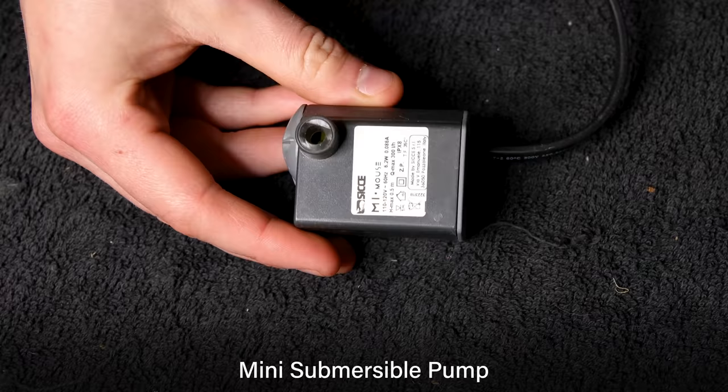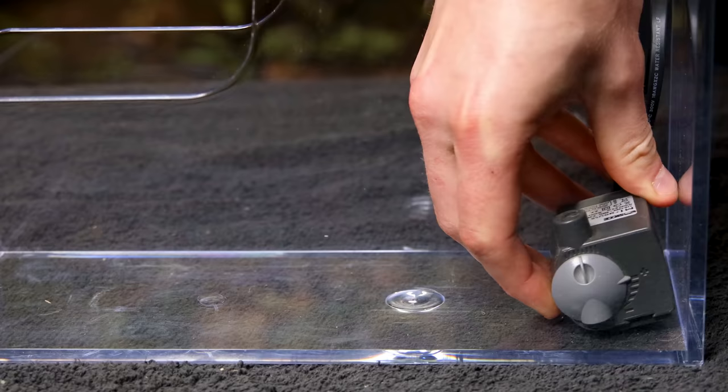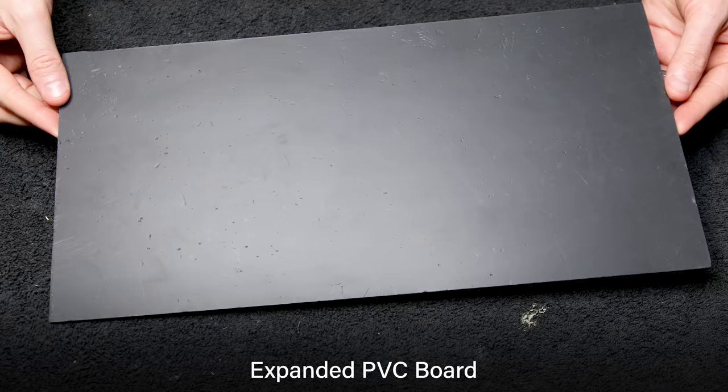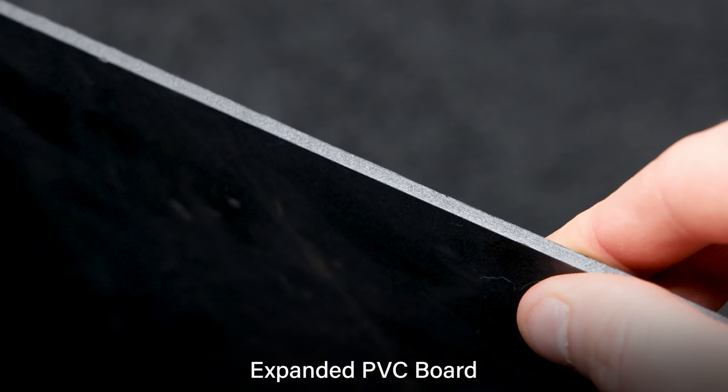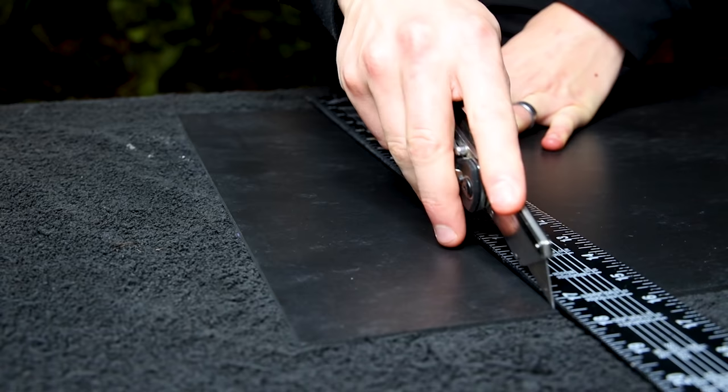To get the water running, I'll need a pump. It'll be placed in the back here, but it should be separate from everything else. A piece of expanded PVC board is a great option for a partition. It's really easy to work with, and cut down to whatever size is needed.